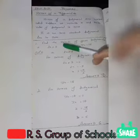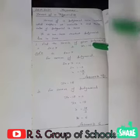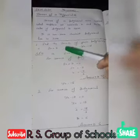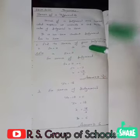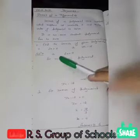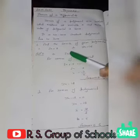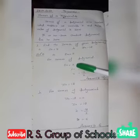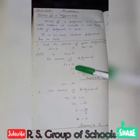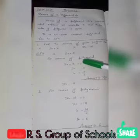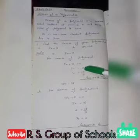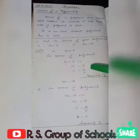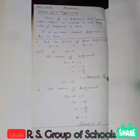For example, find the zeros of the given polynomials. First: 2x plus 3. For zero of polynomial, set 2x plus 3 equal to 0. Then we transfer 3: 2x equals minus 3. Now x equals minus 3 by 2. So the zero of this polynomial is minus 3 by 2.